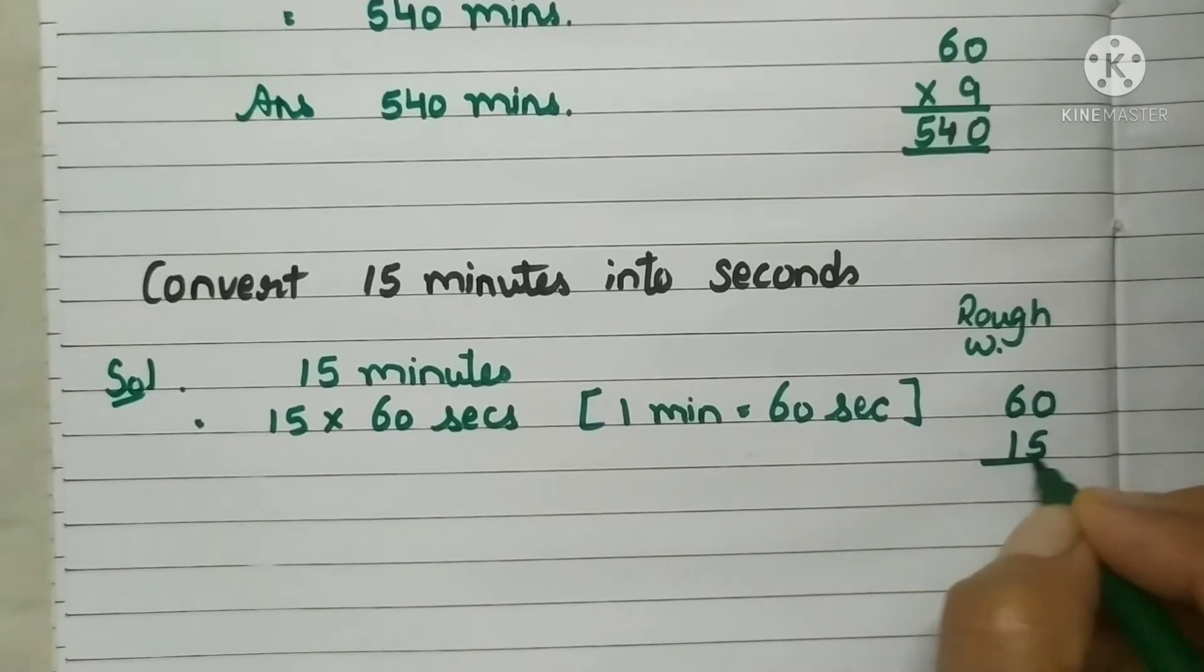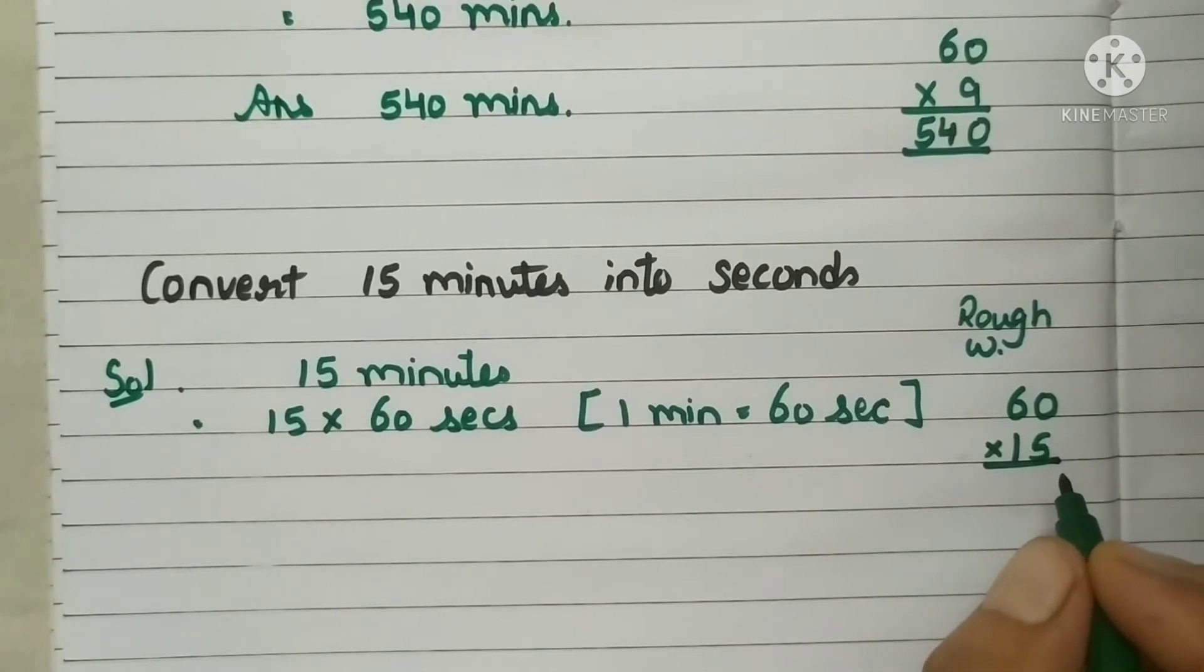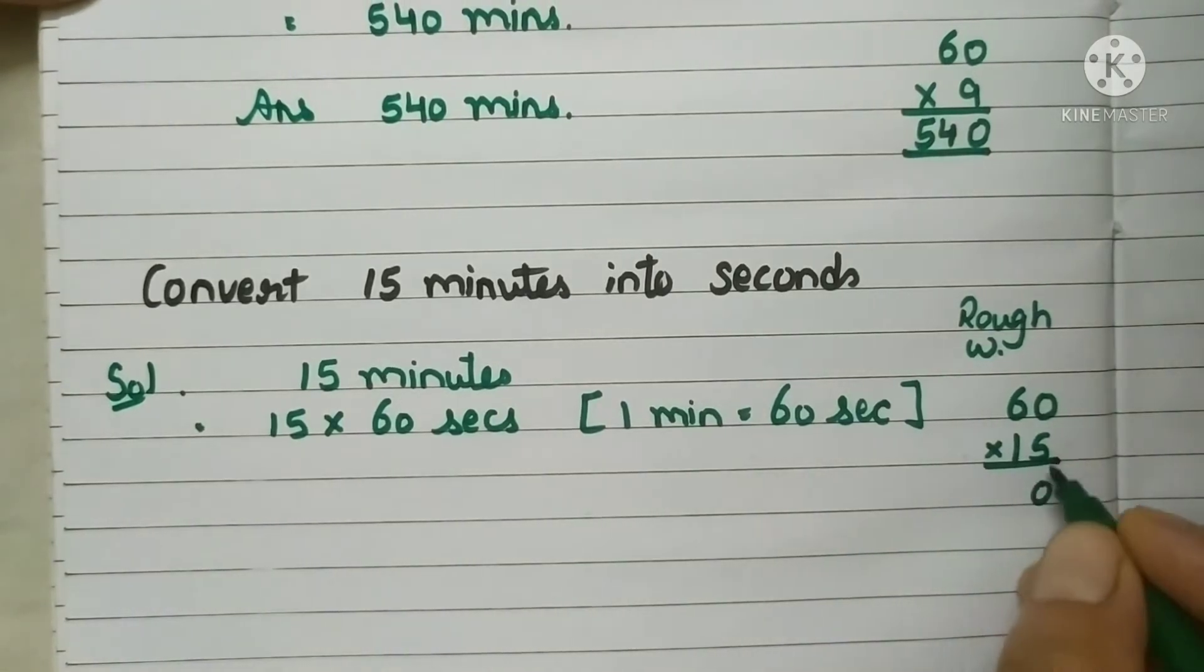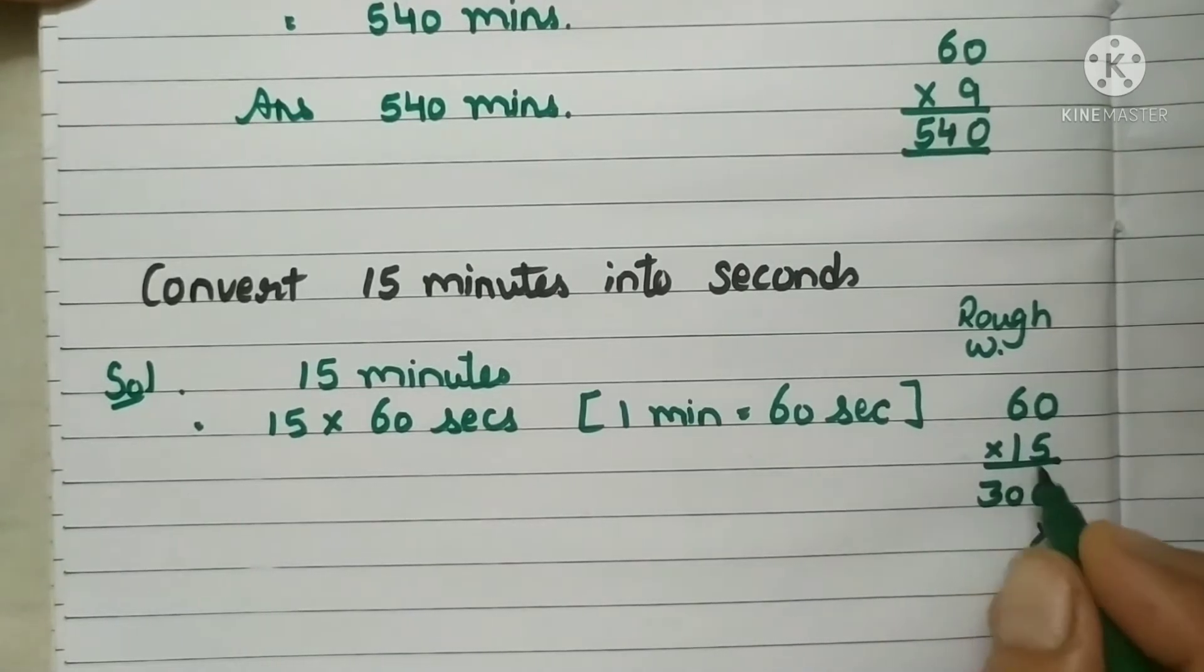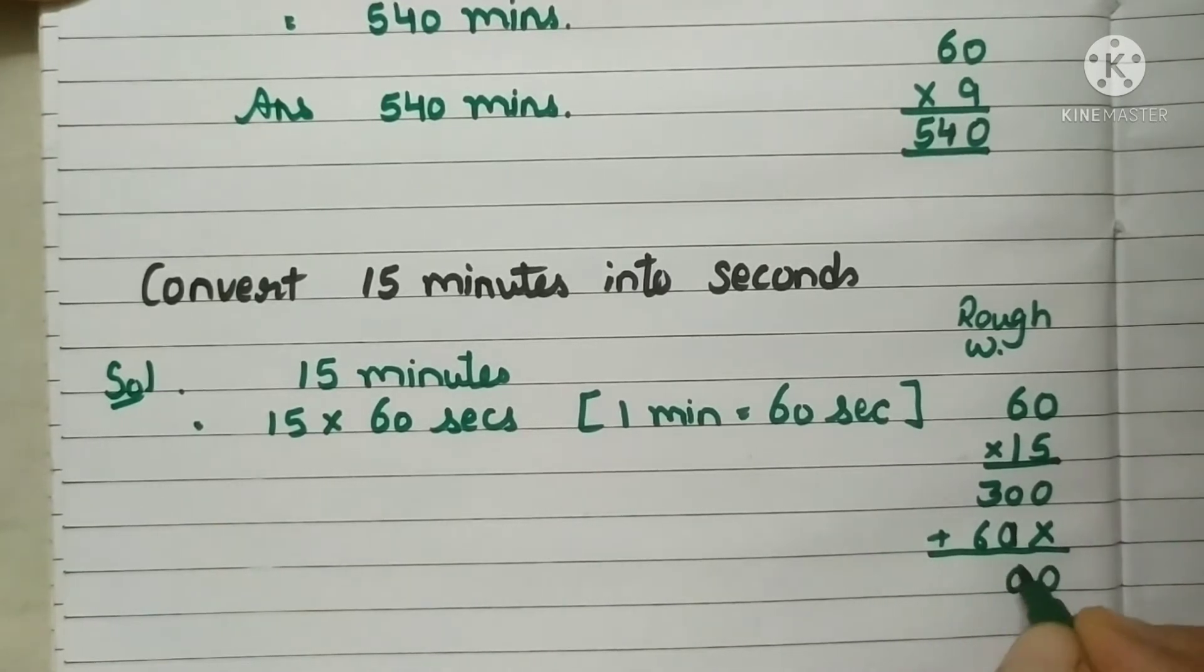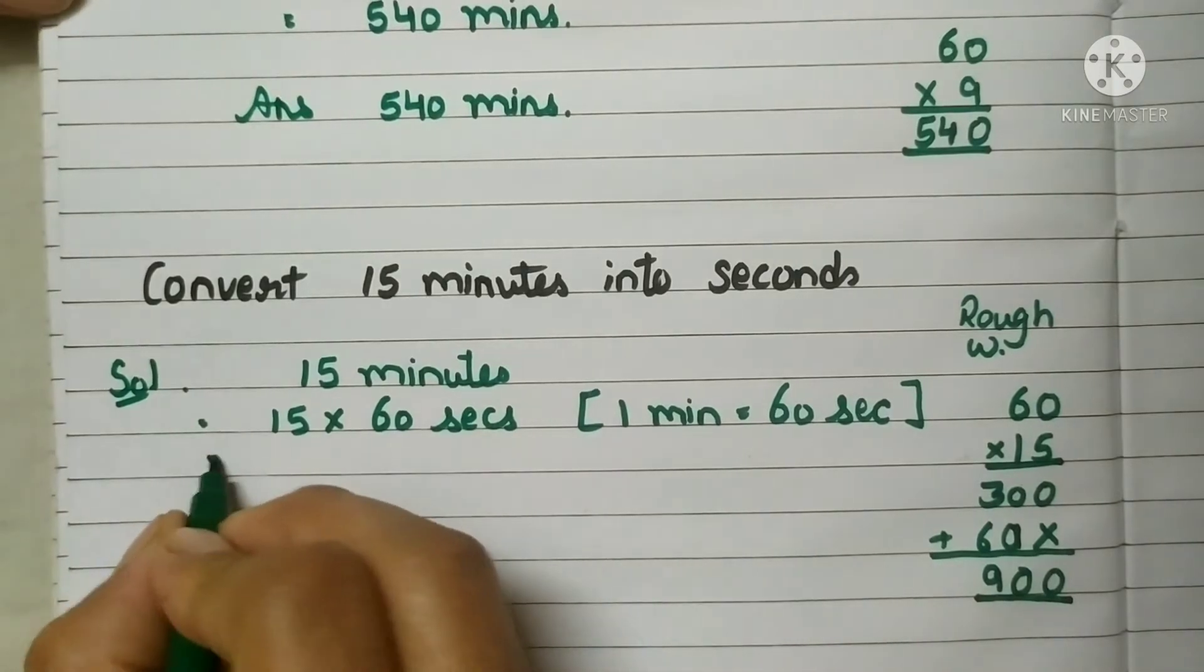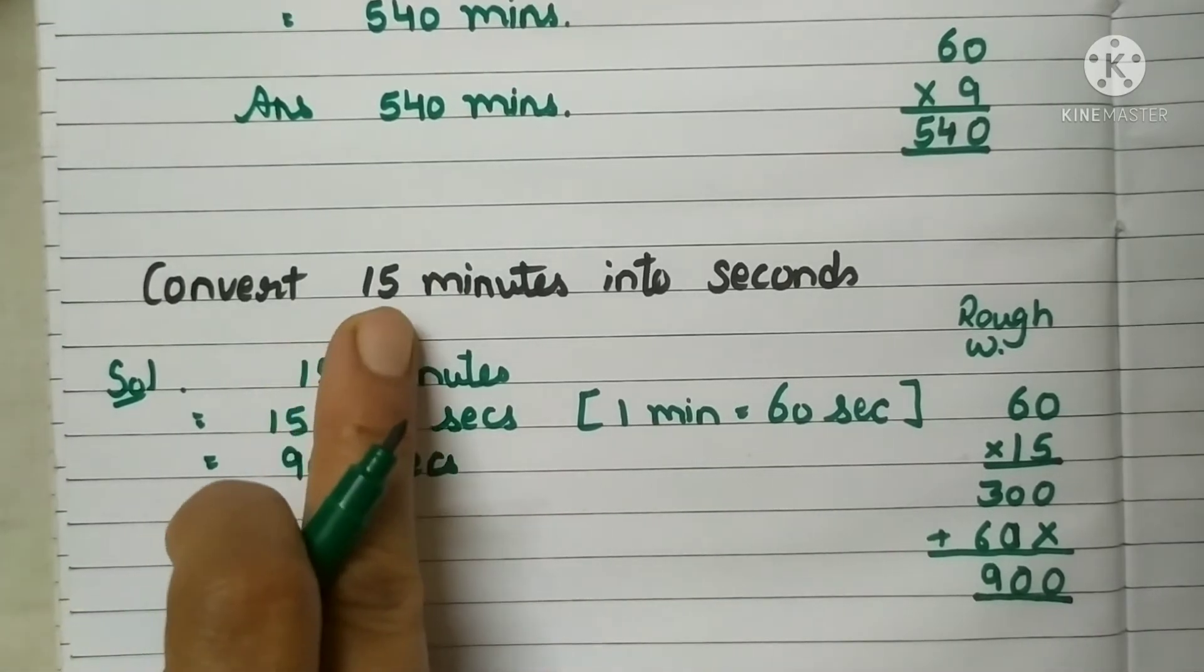60 into 15. If you know the table of 15 it's well and good. 15 zeros are 0 and 15 sixes are, if you know it's well and good, it's 90. So the answer is 900. And if you don't know the table of 15 then we will do like this: 5 zeros are 0, 5 sixes are 30. Then 1 zero is 0 and 1 six is 6. Now we will add this: 0 plus 0 is 0, 6 plus 3 is 9.